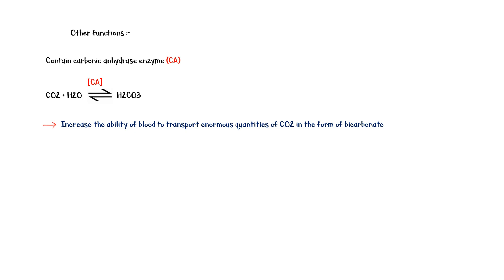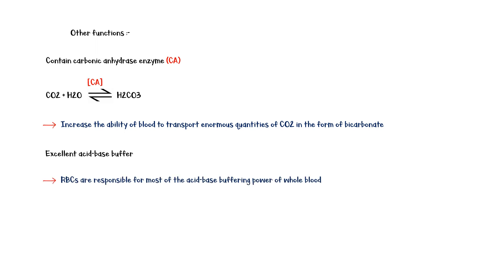Red cells have other functions besides transporting oxygen and carbon dioxide. For instance, they contain a large quantity of carbonic anhydrase enzyme, which catalyzes the reversible reaction between carbon dioxide and water to form carbonic acid, increasing the rate of this reaction. This rapidity increases the ability of blood to transport enormous amounts of carbon dioxide in the form of bicarbonate. In addition, hemoglobin is an excellent acid-base buffer, and therefore red cells are responsible for most of the acid-base buffering power of whole blood.